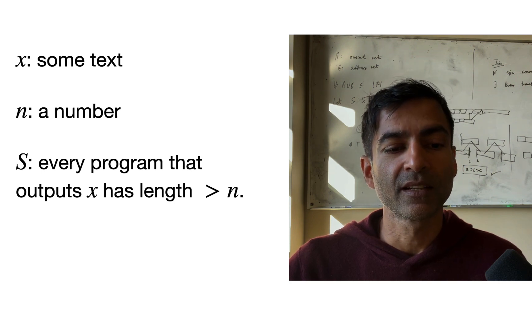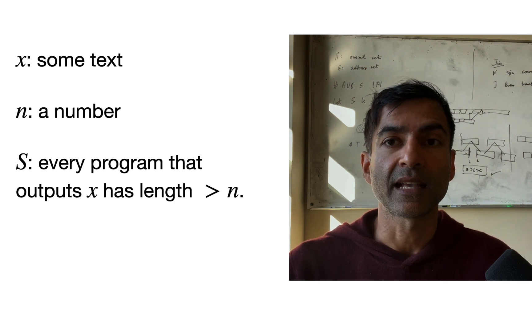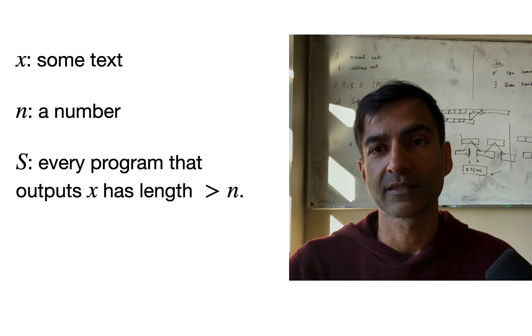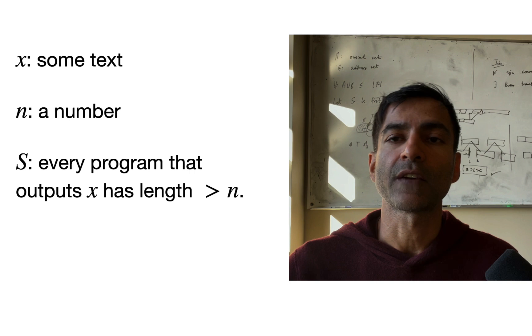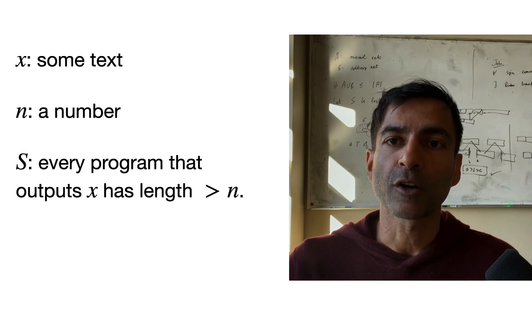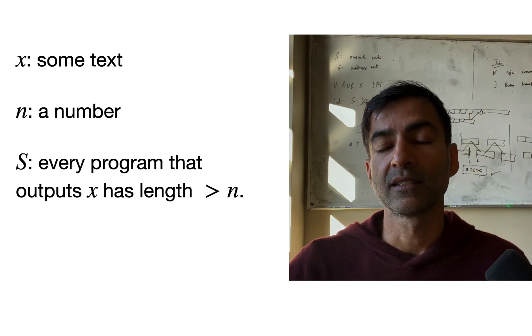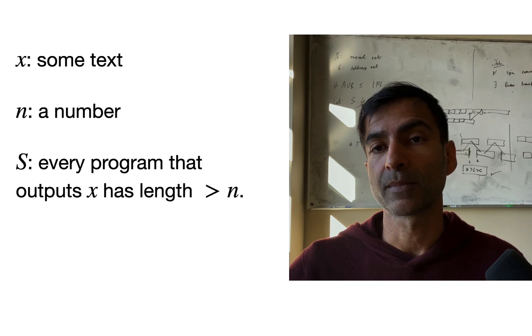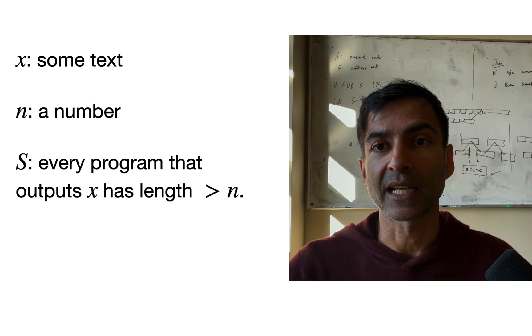And the statement S that we will use has the following structure. It will claim that every program that outputs x has length bigger than n. So if you have a program whose output is equal to x, then the length of the code of that program must be bigger than n. That is the claim made by S.